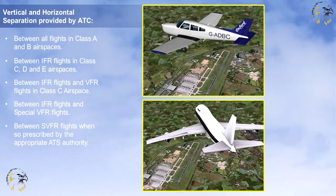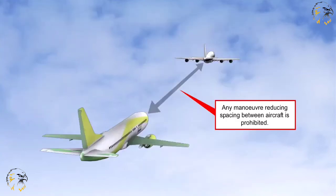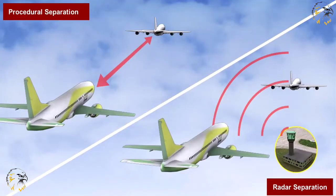However, IFR flight in VMC during daylight in Classes D and E airspace may be cleared to climb and descend whilst maintaining its own separation. Clearances will not be given to execute any manoeuvre that would reduce the spacing between two aircraft to less than the separation minimum applicable. Larger separations will be applied whenever wake turbulence or exceptional circumstances, such as in-flight emergencies or unlawful interference, require the added protection of a greater separation.